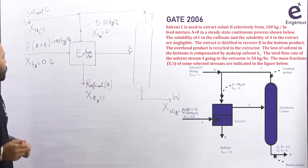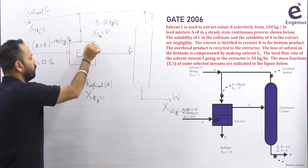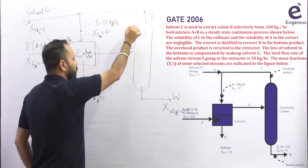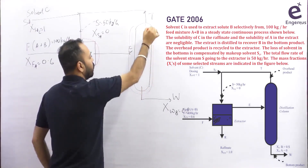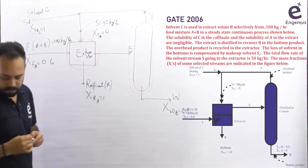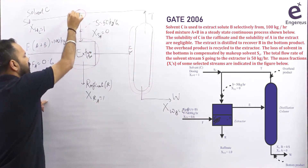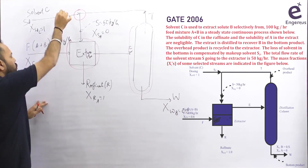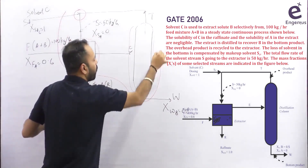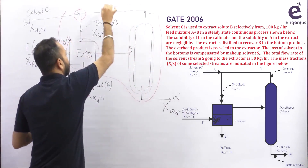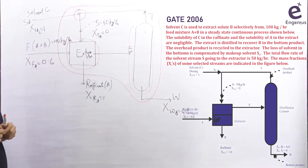First, how many systems do you see here? First one is the extractor, second is the distillation column, third is the mixing point, and fourth is the overall system. These are the four systems.